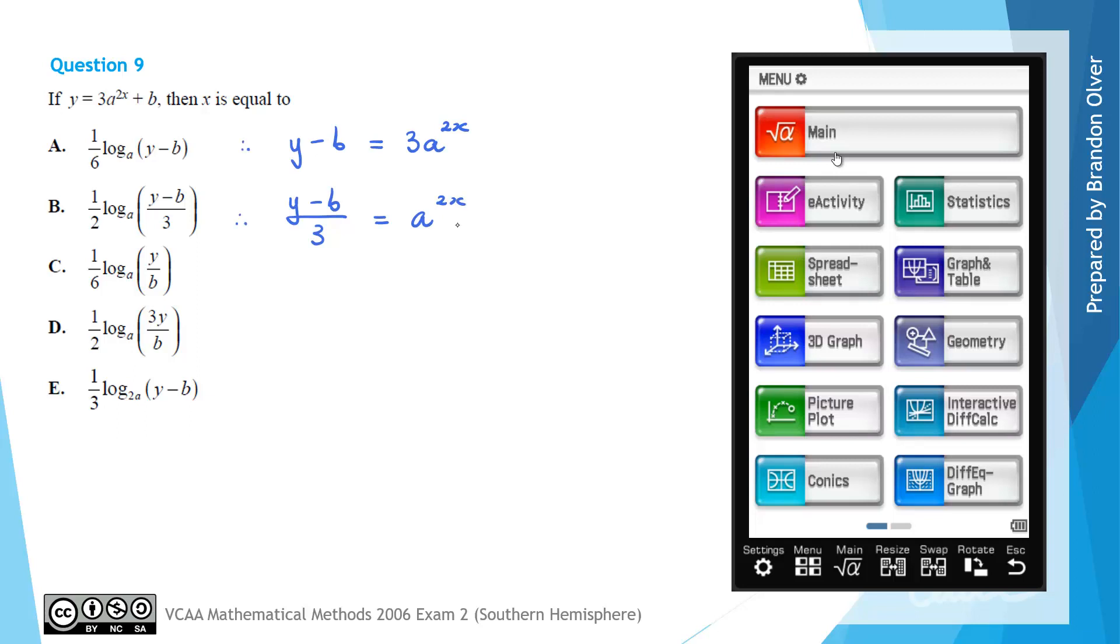Next, to get x by itself we need to get it out of the power position. So what we're going to do is take an equivalent log statement so that we can get 2x by itself to start with. So that would mean that we have log base a, because when we take an equivalent log statement the bases stay the same, and then we lock up this y subtract b over 3 inside the log and what that does is it gets 2x by itself.